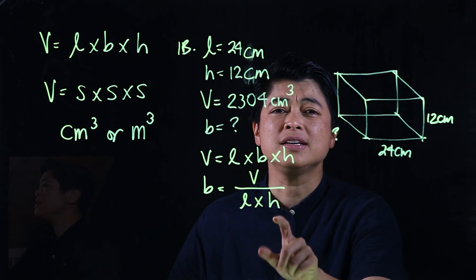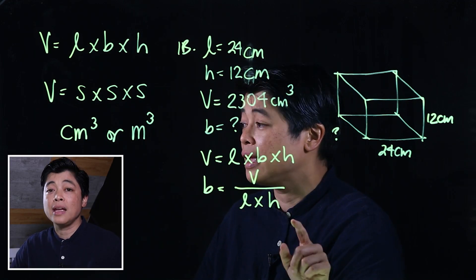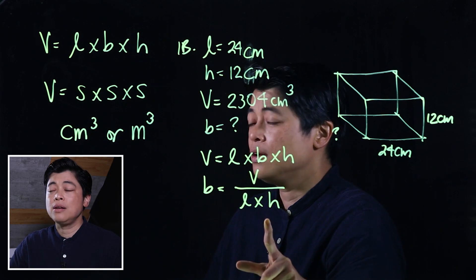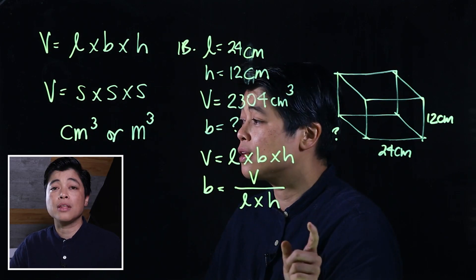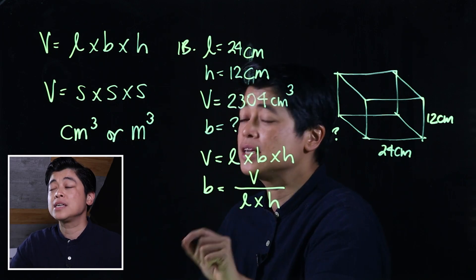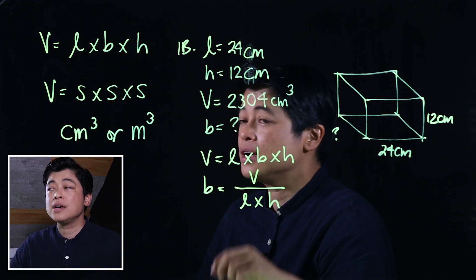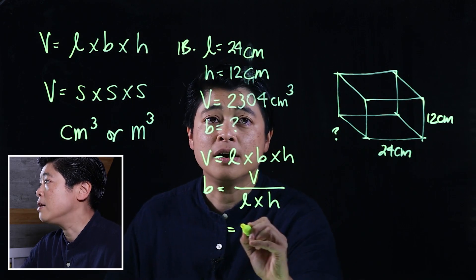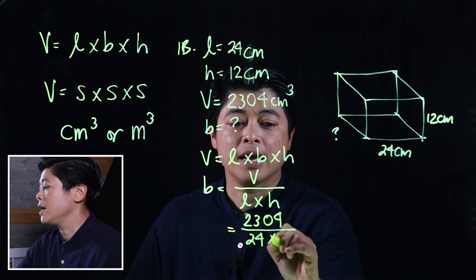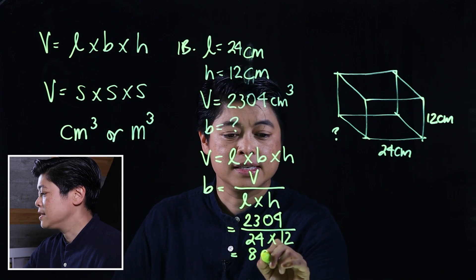When entering this in the calculator, be careful: if you type the number, then divide, then times, it will not follow the correct order of operations. You must use parentheses or type it as a fraction — put the value on top and the denominator on the bottom. So the breadth equals 2304 divided by (24 times 12), which gives us 8 centimeters.